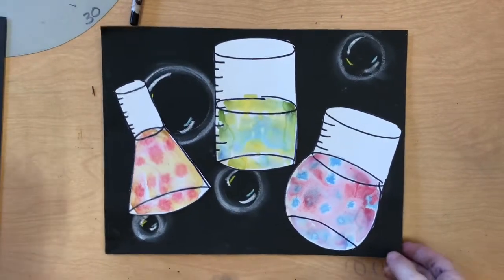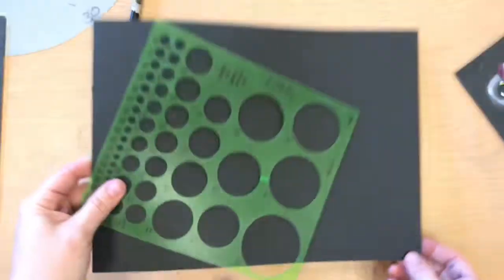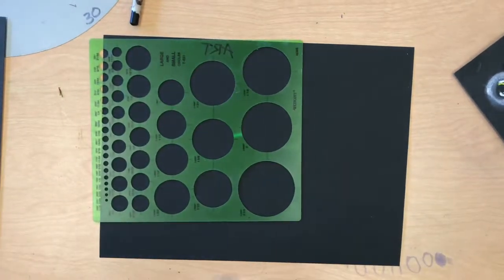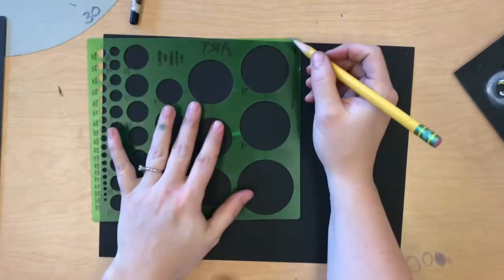Hello students, we're going to pick up where we left off last time. We made three three-dimensional clear shapes that had science experiments going on inside.